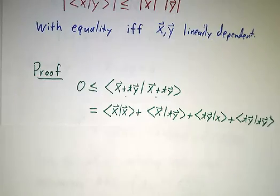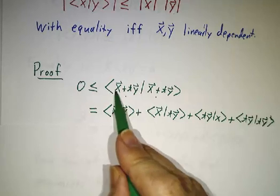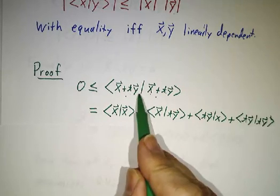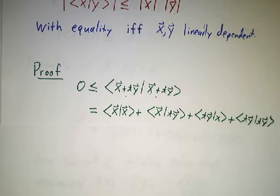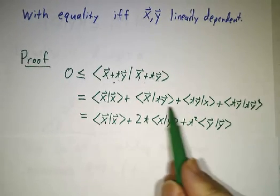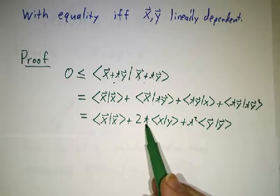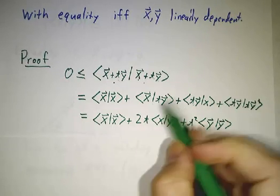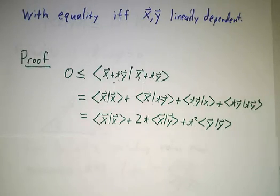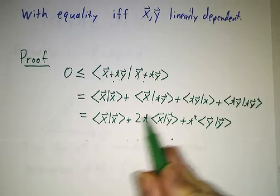And then you can expand it out using linearity. x times x, x times ty, ty times x, ty times ty. And then, using symmetry, you say x times ty is the same thing as ty times x is t times x times y.